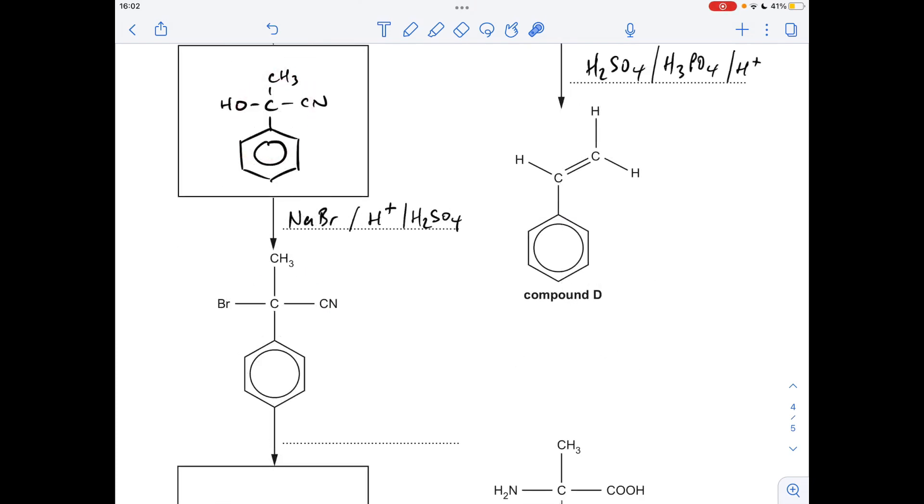And then to turn the hydroxynitrile into this bromonitrile, we just need to substitute the OH group for the bromine. So you'd react it with a mixture of sodium bromide and acid, so you could either go NaBr slash H plus or slash H2SO4.